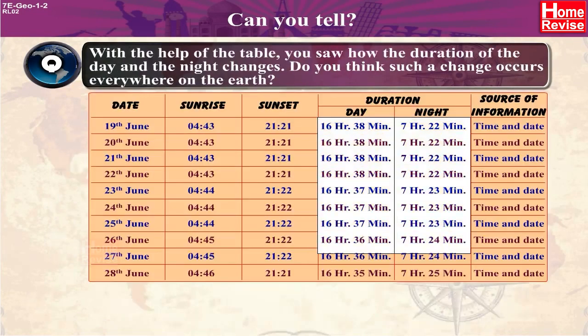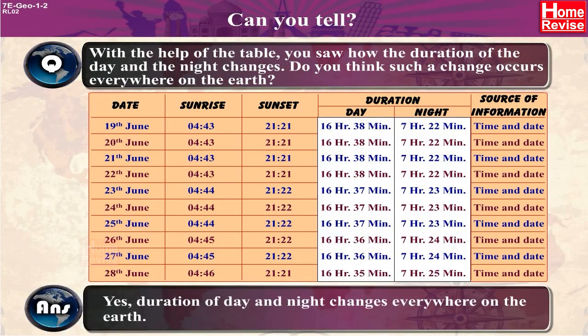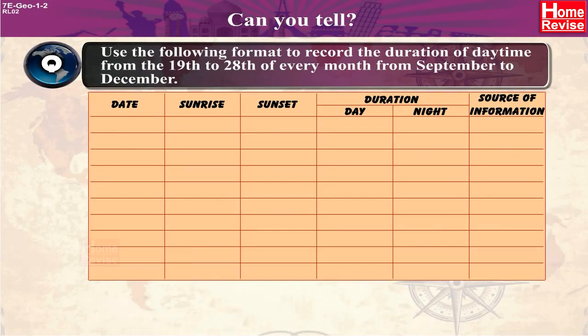With the help of the table, you saw how the duration of the day and the night changes. Do you think such a change occurs everywhere on the earth? Answer: Yes, the duration of day and night changes everywhere on the earth. Use the following format to record the duration of daytime from the 19th to 28th of every month from September to December.